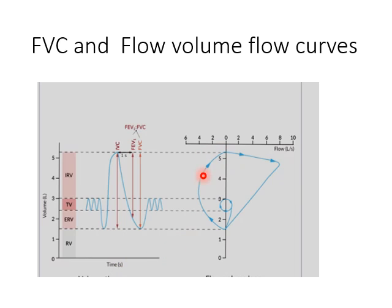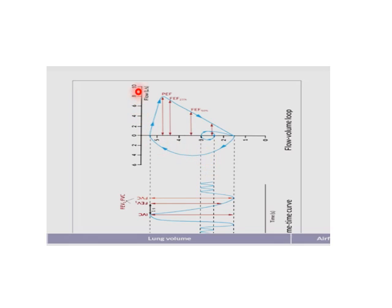At times we measure something different: the flow at different lung volumes. This is the airflow on one axis and lung volume on the other, producing what are known as flow-volume curves. One test measures the volume of air that can be expired or inspired versus time. In the flow-volume approach, we measure the flow rate — how much air is flowing out of the lung at different lung volumes.